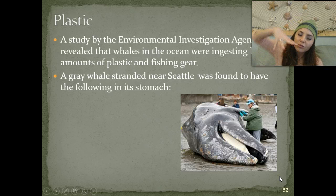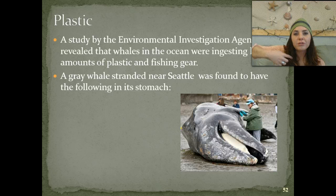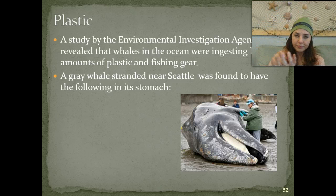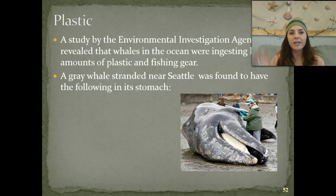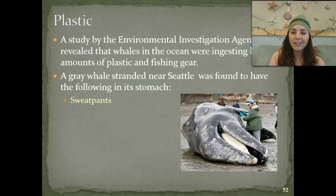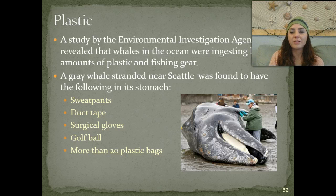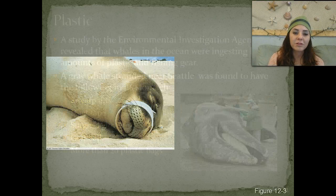Grey whales are baleen feeders. They have these long teeth made out of keratin, kind of like your hair, and they're filter feeders. They take in huge gulps of water and force all of the water out through their baleen, then swallow all of the solid particulates left over—typically going for krill and things like that. Unfortunately, when this whale was feeding and filtering water through its baleen, this is what it had ingested: sweatpants, duct tape, surgical gloves, golf balls, and more than 20 plastic bags. All of those caused this whale to die, because it had consumed so many different types of items that we basically just dumped into the oceans.